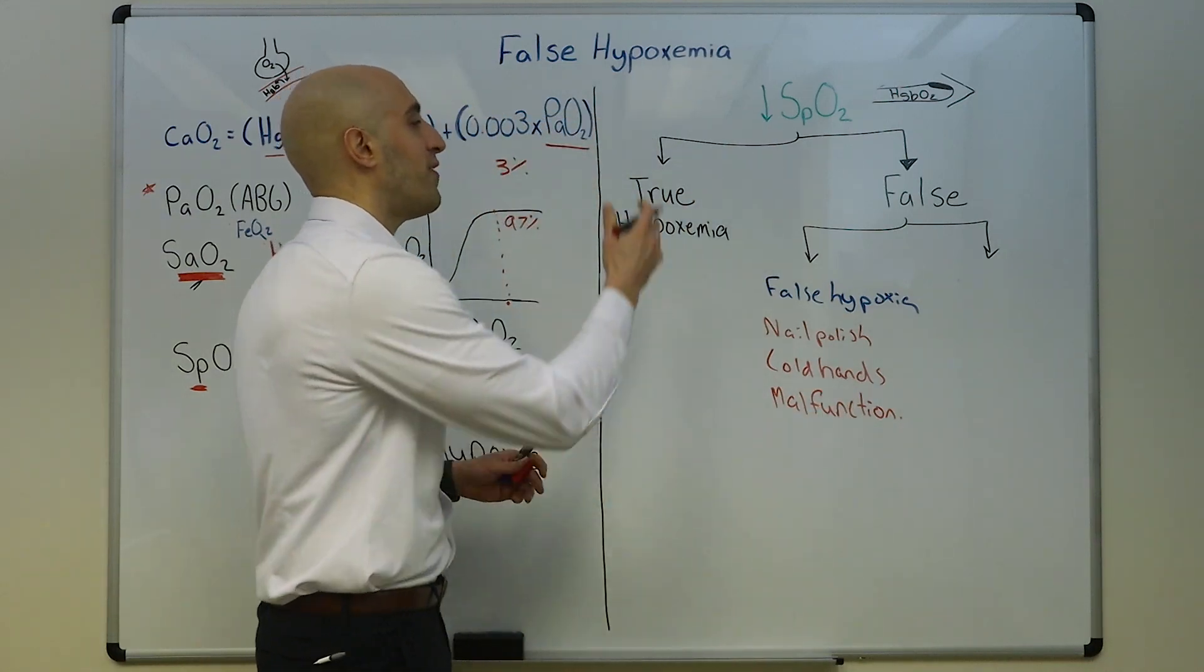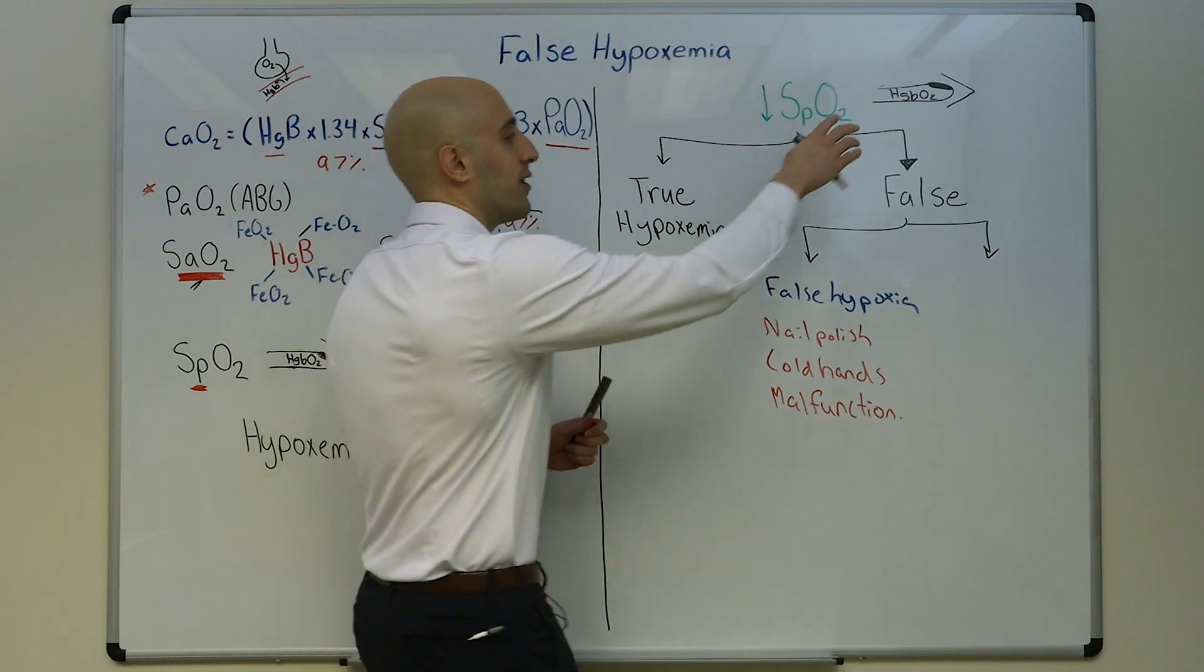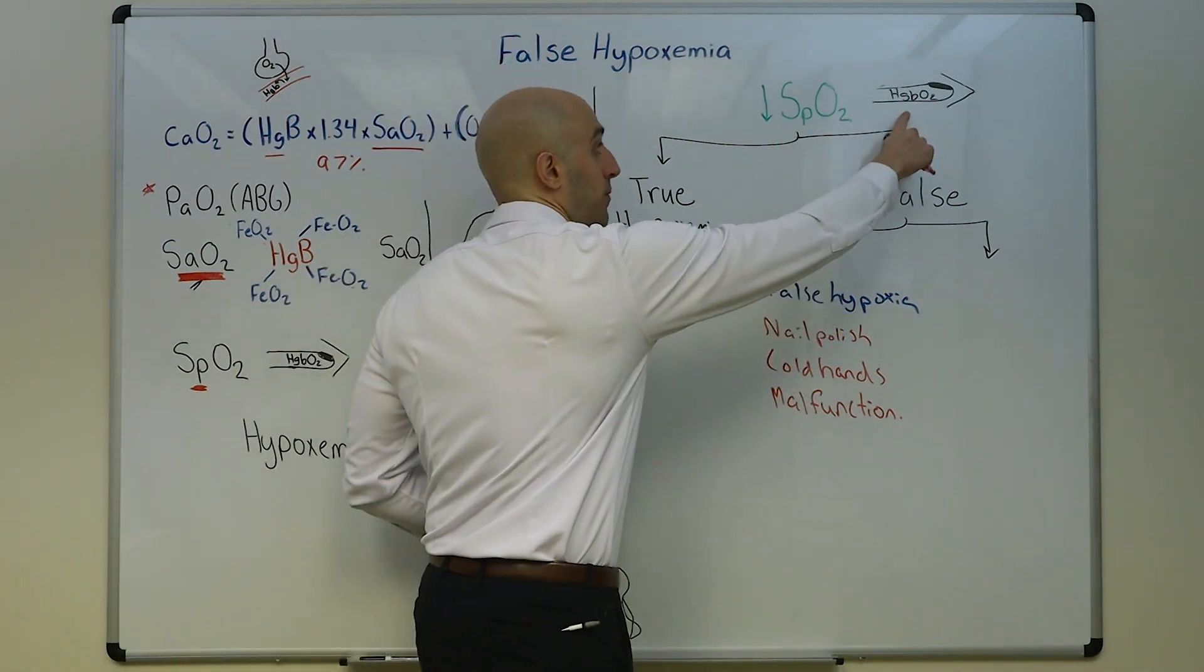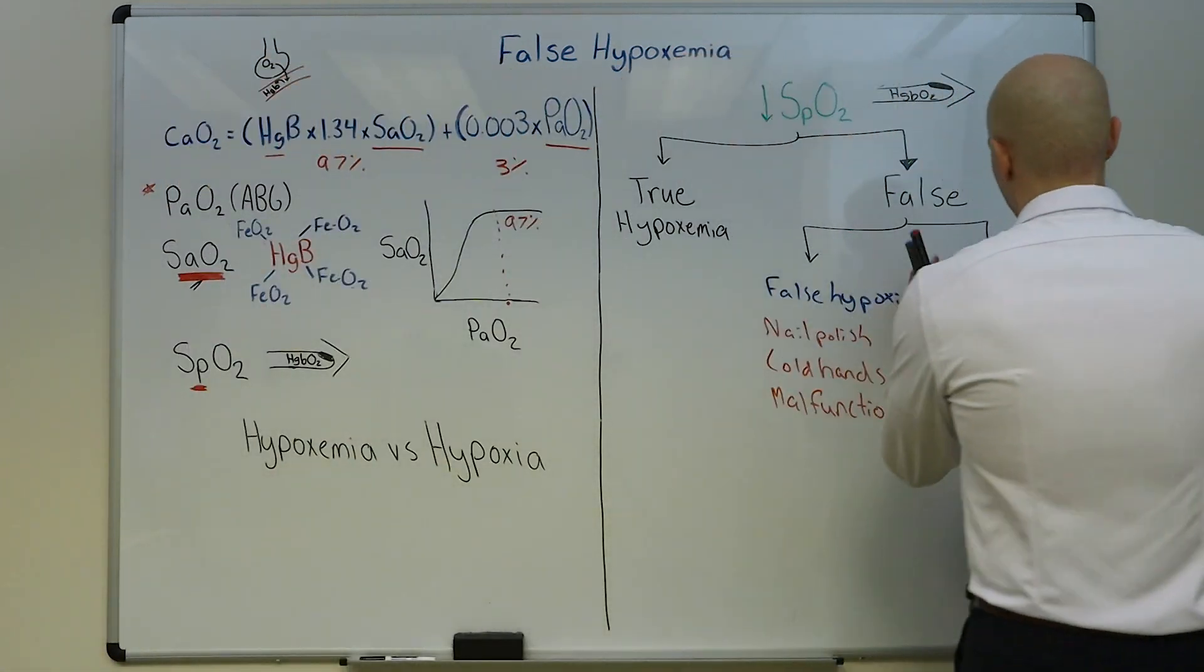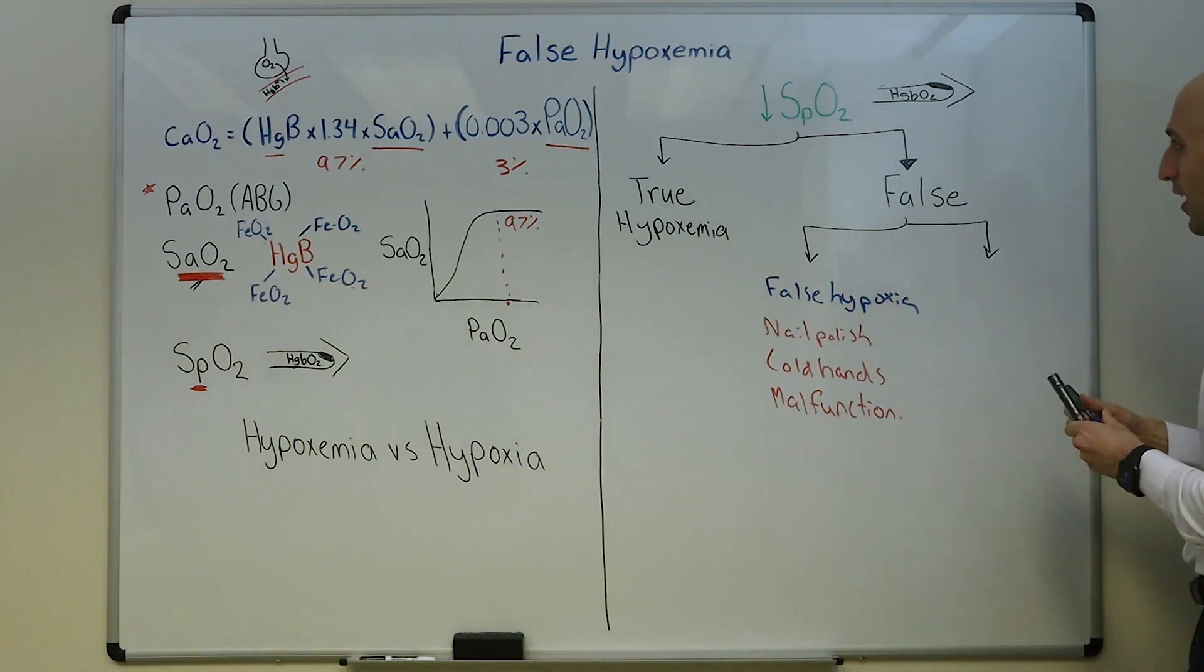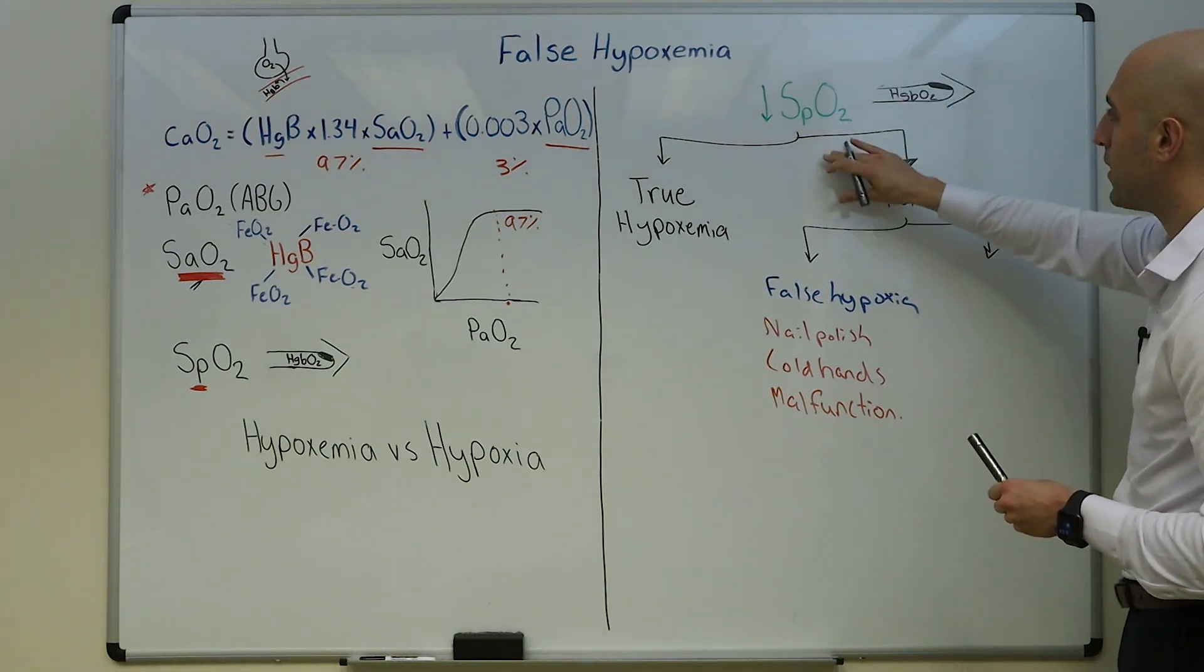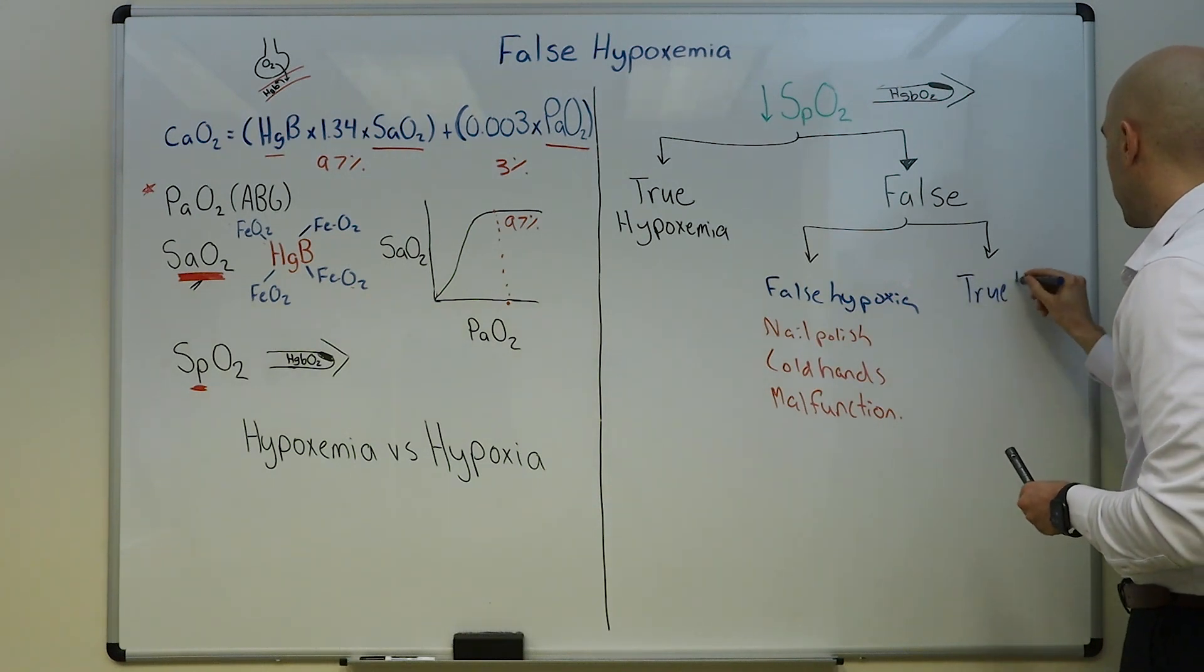What can result in this? How about if you had nail polish, or what if your hands were cold? My hands are always cold and you have peripheral vasoconstriction, cold hands, or what if the device wasn't working, so malfunctioning device. All of these result in false hypoxemia because the device can't accurately shine the infrared and red light to determine the SpO2.